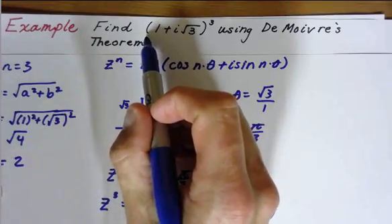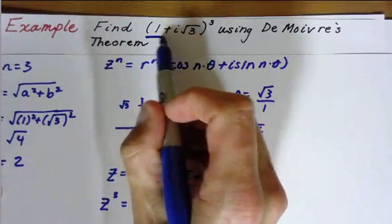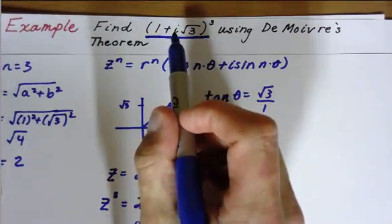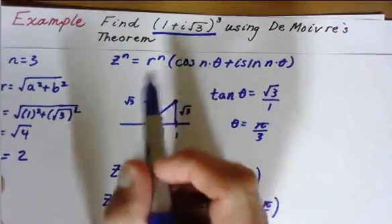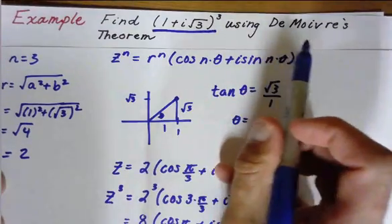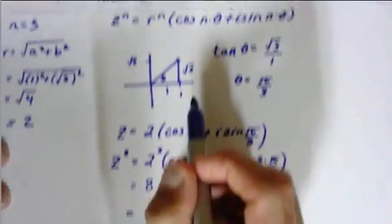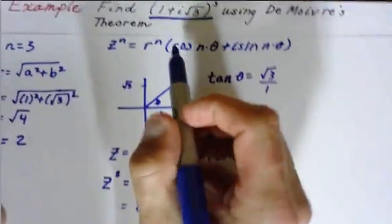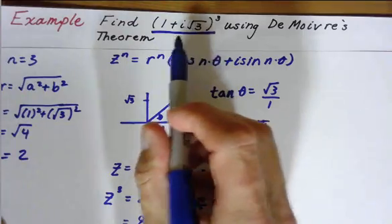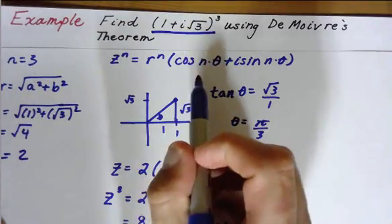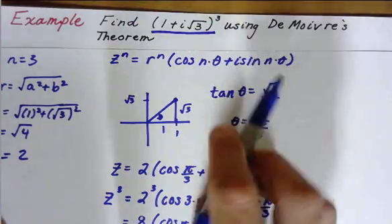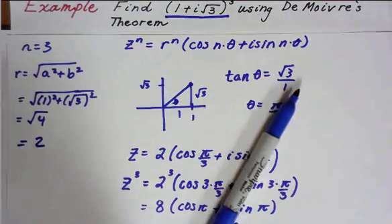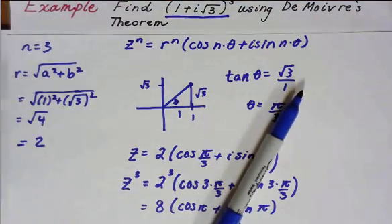You can plug this in on the graphing calculator, and I'll show you how to do that in a little bit. But this is another way, using De Moivre's Theorem, to find the value of this complex number in polar form. If you have any questions or comments, let me know. We'll see you next time.